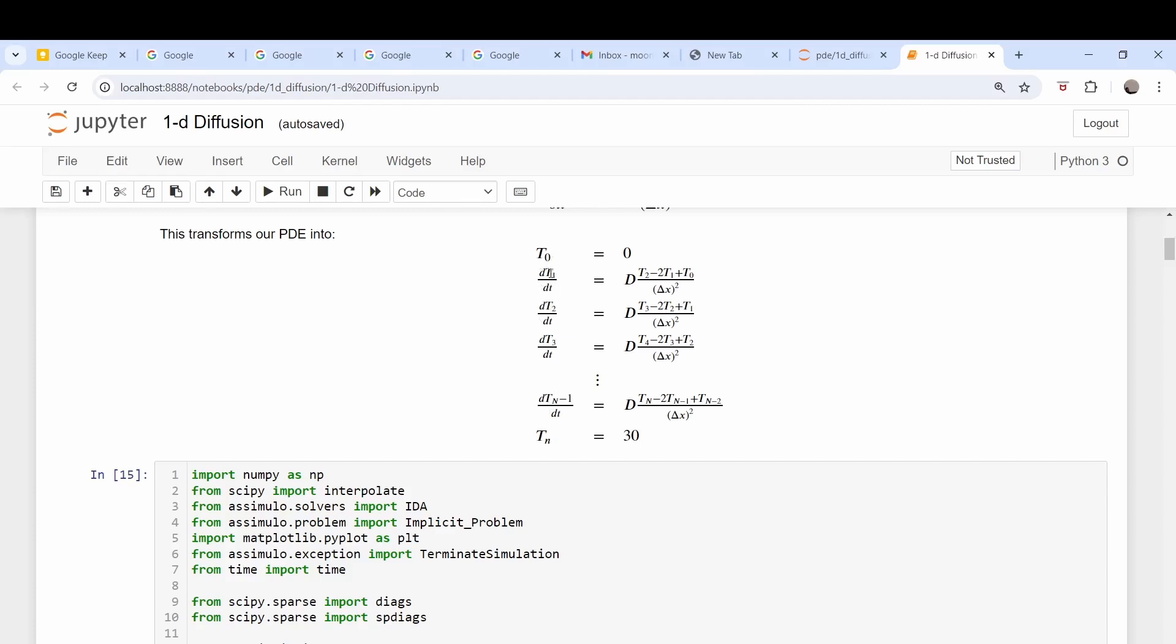So we have an ordinary differential equation here, and our partial derivatives are approximated by this difference formula with the two boundary conditions being here: T at zero is equal to zero, and T at our last boundary point N is equal to 30.